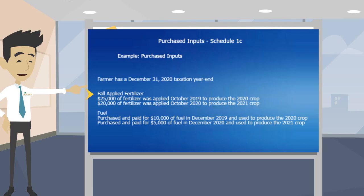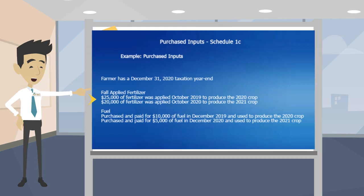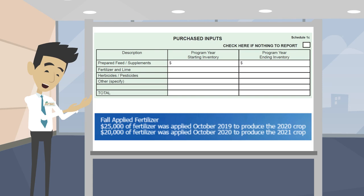It does not matter if Farmer Joe fall-applied the fertilizer or stored it in a bin — it is a purchased input. In this example, Farmer Joe fall-applied $25,000 worth of fertilizer in October of 2019 to produce the 2020 crop. And in the fall of 2020, Farmer Joe applied $20,000 of fertilizer to produce the 2021 crop. To help you follow along, we will put Joe's information on the bottom and show you where to enter it on the top.